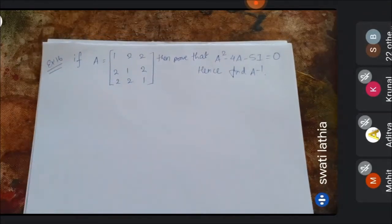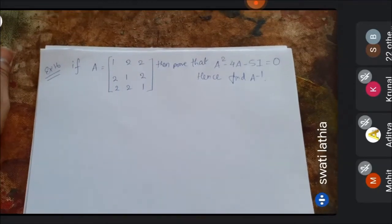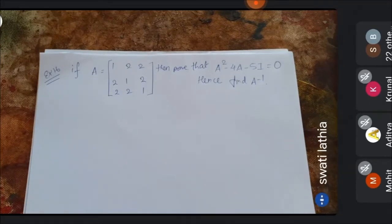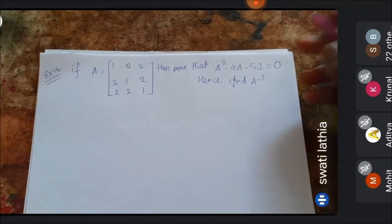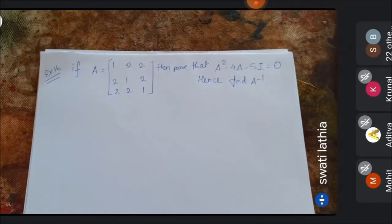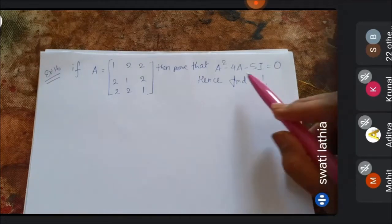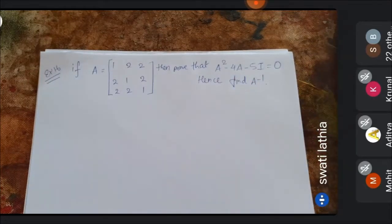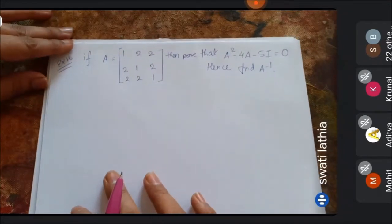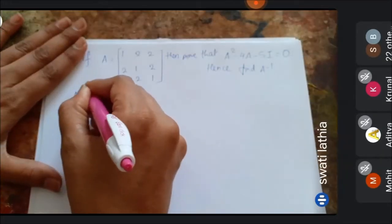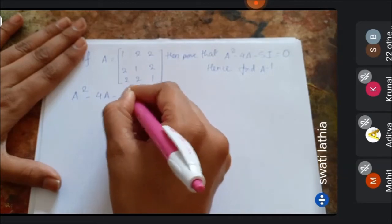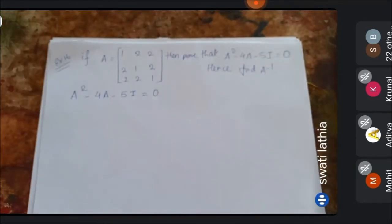Let us take example number 16. A 3×3 matrix A is equal to [[1,2,2],[2,1,2],[2,2,1]] is given. Now prove the equation A² - 4A - 5I = 0, and hence find A inverse. It means we have to find A inverse using the equation, not directly.